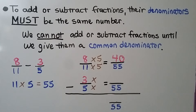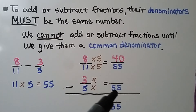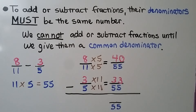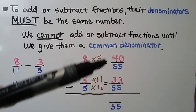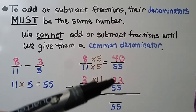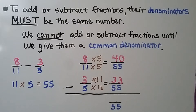8 elevenths is equal to 40 fifty-fifths. Then we ask: 5 times what number equals 55? That would be 11. We multiply the numerator 3 times 11, which is 33. For our subtraction equation, we have 40 fifty-fifths minus 33 fifty-fifths. 40 minus 33 is 7, so our difference is 7 fifty-fifths. That is in simplest form because 1 is the only common factor for 7 and 55.